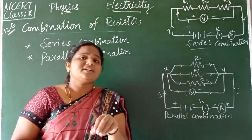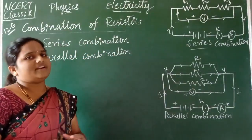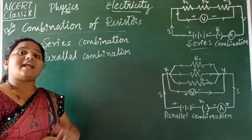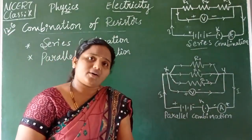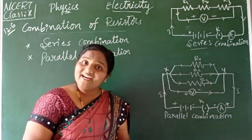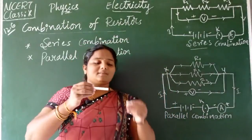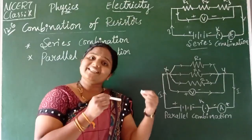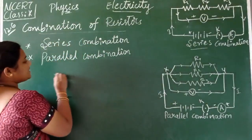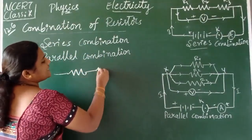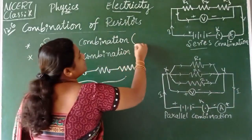Generally, the combination of resistors is of two types: one is series combination, and the second is parallel combination. In a series combination, a number of resistors are connected side by side. Just like chapatis placed one next to another — if resistors are joined side by side, that pattern is called series.